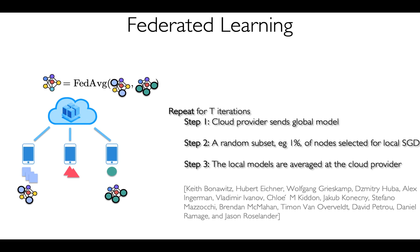In the prototypical Federated Learning setting, during each iteration, the model is pushed to a subset of nodes. Each of these nodes performs a few local epochs of SGD to fine-tune the user's model. Each of those fine-tuned models is then sent back to the cloud provider that aggregates them and combines them into a new global model, and the iterations carry on until a good accuracy model is obtained. There has been a lot of recent work on how to come up with efficient variants of this scheme that reduces communication, number of rounds, and how to optimize for accuracy across the entire user base.